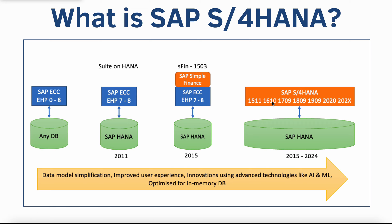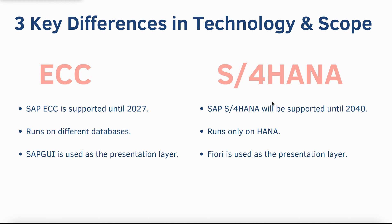Now let's take a look at the key differences between ECC and S4HANA and why SAP customers are migrating from ECC to S4HANA. The first key difference is in technology and scope. One of the key reasons for SAP customers considering to move to S4HANA is that ECC will go out of support in 2027.